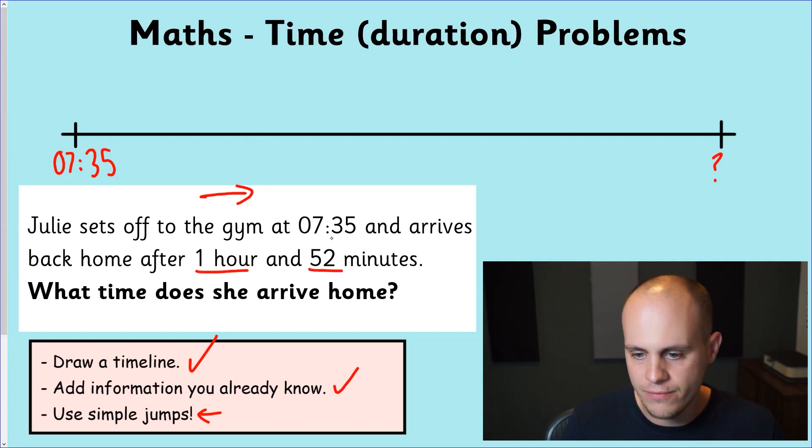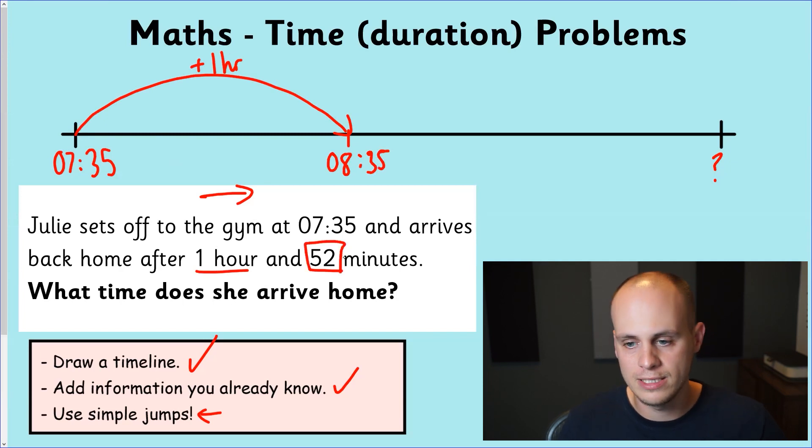We're jumping one hour and 52 minutes. There's a nice easy start here because we can just jump one hour very easily. Mark it on our number line. So plus one hour, and we're simply adding an hour to seven. So that becomes 08:35. Now all we've left ourselves is the 52 minutes. And here's what I mean by an hour checkpoint. I can tell without having to do any maths that if I try to jump 52 minutes from 08:35, we're going to go into the next hour. It's not as simple as adding 52 and 35 getting 87, because we know time doesn't work like that. We only have 60 minutes per hour.